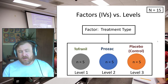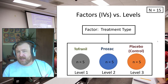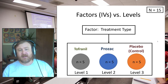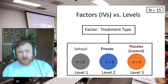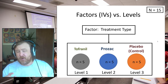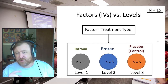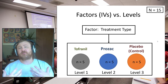It's important not to confuse a factor with the levels of the factor. It's very easy to think that tofranil, Prozac, and placebo are three separate independent variables, when in fact they're just one independent variable under the heading of treatment type.